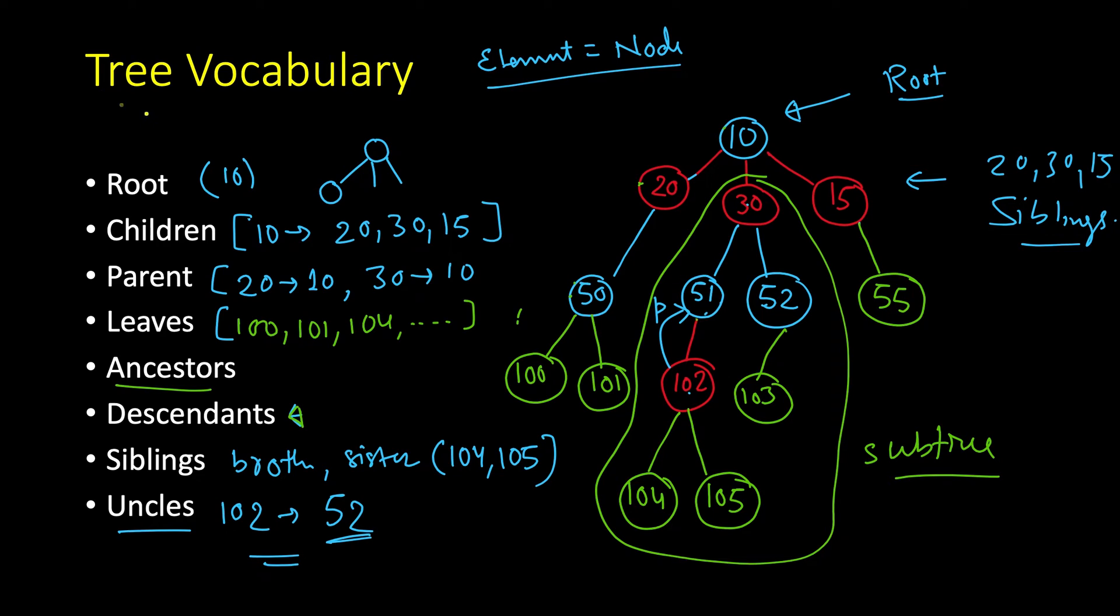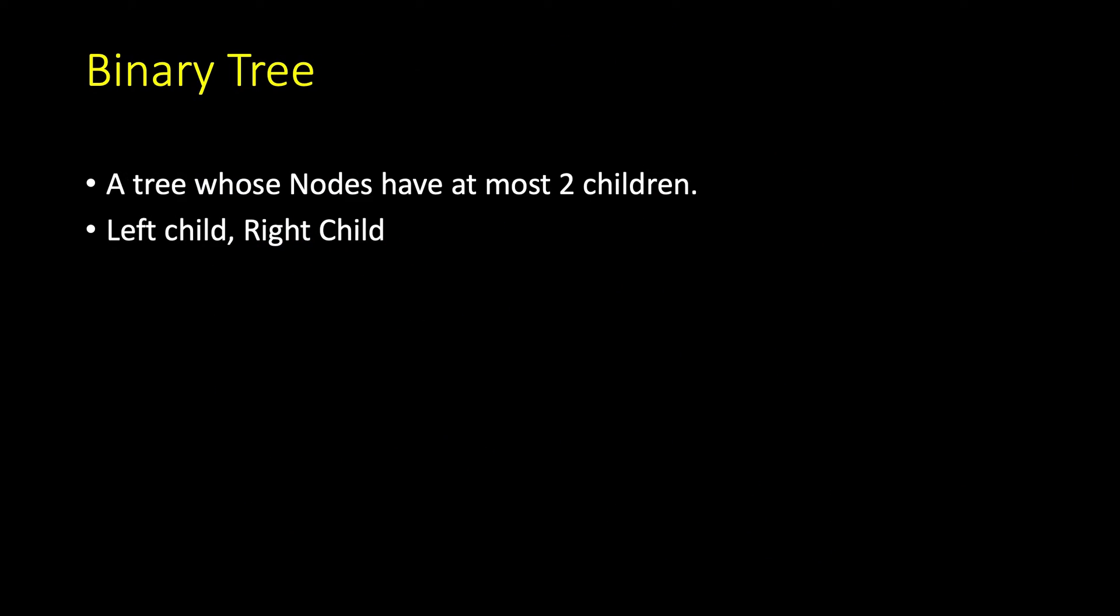So all the tree vocabulary that we learned in our previous lesson remains applicable in the case of binary tree as well. So root, children, parent, leaves all are applicable. Now let's see what is a binary tree.